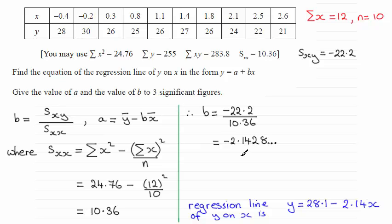So when you substitute those values into this formula, this is what you should get. A turns out to be 28.071 and so on. And so when you round that to three significant figures, that's going to be 28.1.